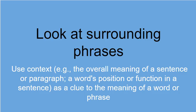We want to train ourselves to look at surrounding phrases. If we are working on increasing our vocabulary by increasing our lexile complexity — in other words, reading harder books — we need to train ourselves to look at those surrounding phrases. To use context, look at the overall meaning of a sentence or paragraph, and a word's position or function in a sentence as a clue to the meaning of a word or phrase. Please pause the video and write down what you find important on this screen about learning or using context.